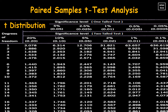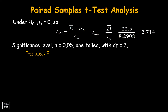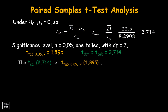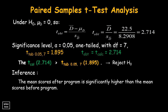Using the t distribution table, look for degrees of freedom of 7 at the side rows, then the significance level for one-tailed test of 0.05 at the top columns. The tabular t value is 1.895. Since t calculated of 2.714 is greater than t tabulated of 1.895, we reject the null hypothesis. This implies the mean scores after the program are significantly higher than the mean scores before the program. Therefore, the program is effective.